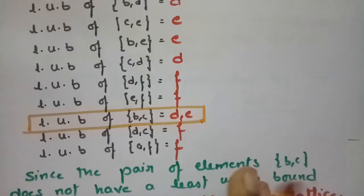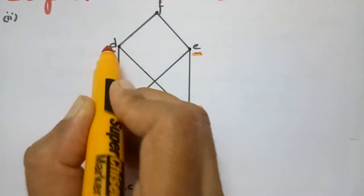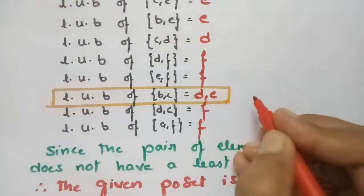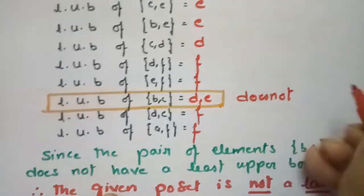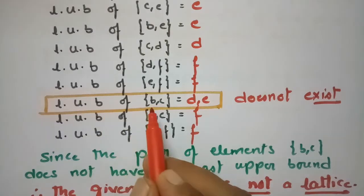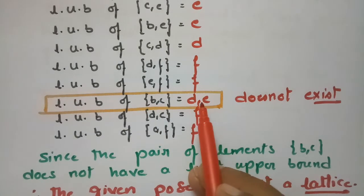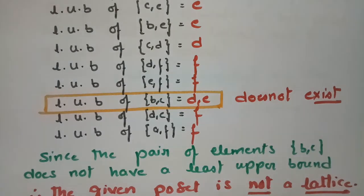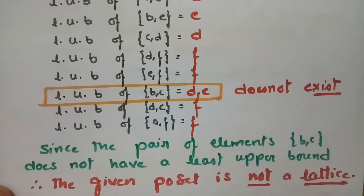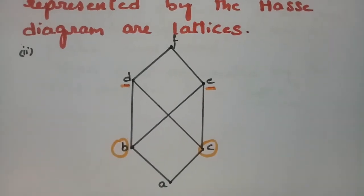So the least upper bound of b and c: if we observe, we have two upper bounds — d and e. The least upper bound and the greatest lower bound must be unique, meaning a single value. Here we got two values, therefore it does not exist. Since the pair (b, c) does not have a unique least upper bound, the given poset is not a lattice.